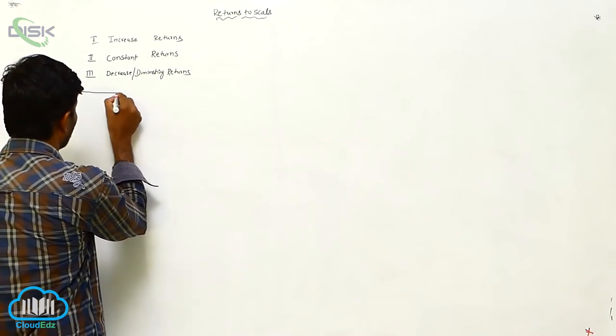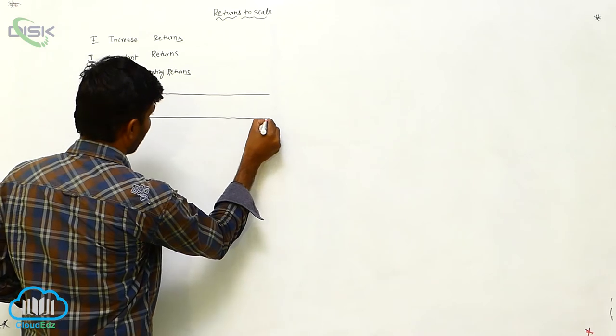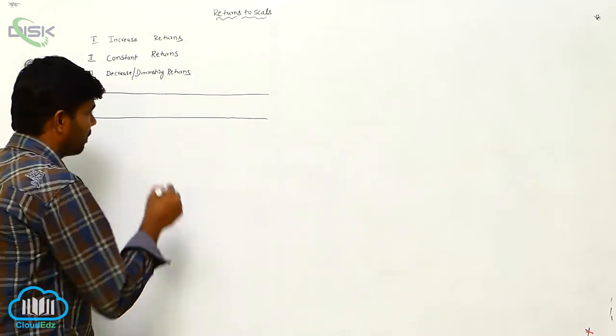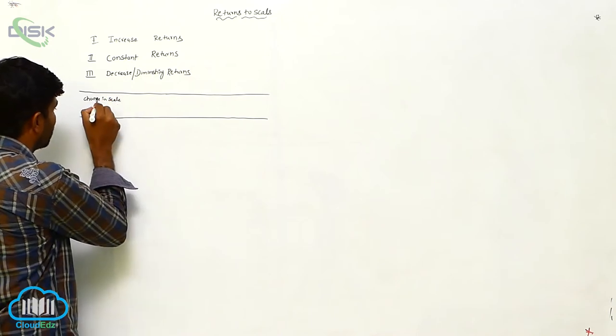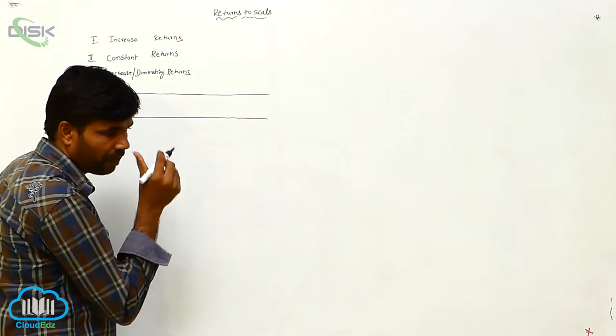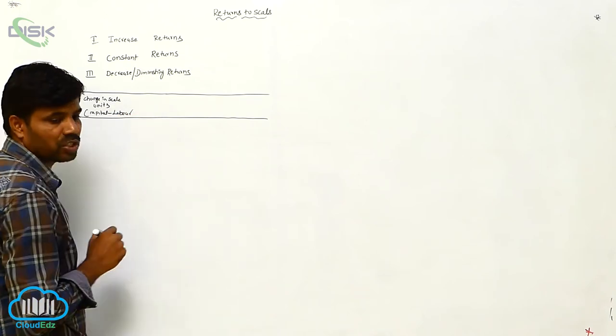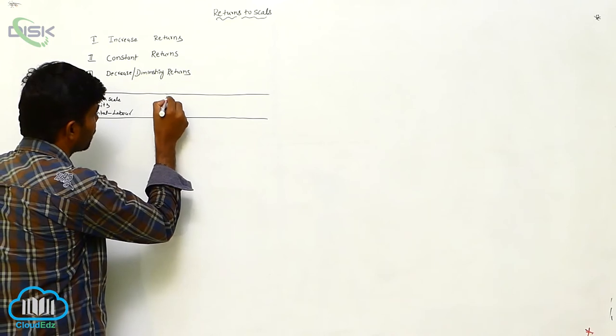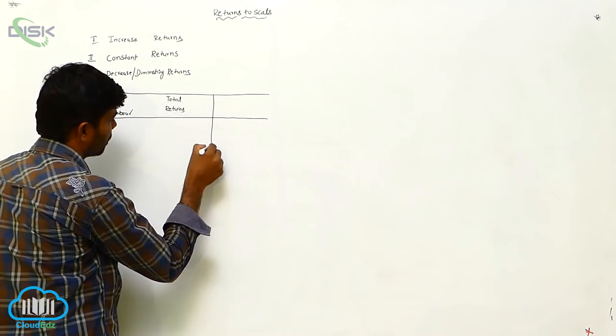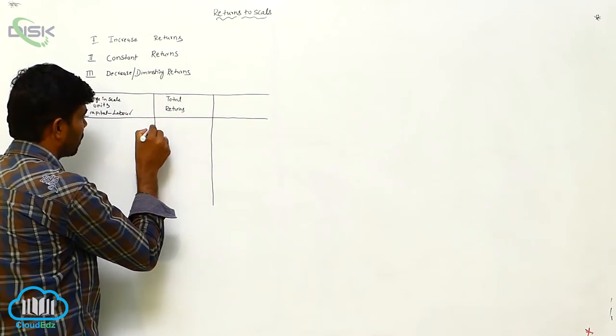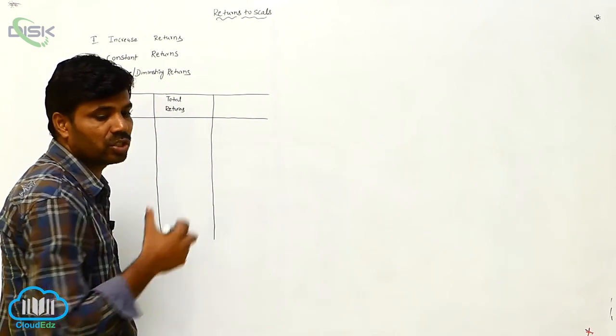First is take table. What is the first one? Changing in scale. Change in scale means units, like capital minus labor. Capital labor, first column. Second column, total returns. Third stage is marginal returns.